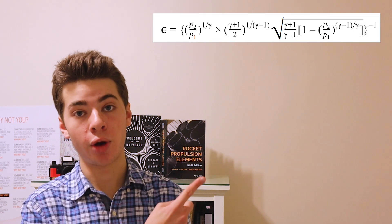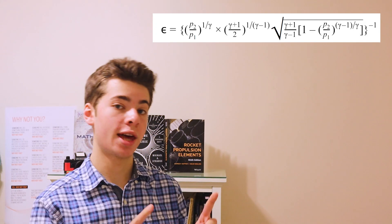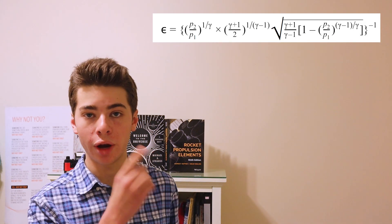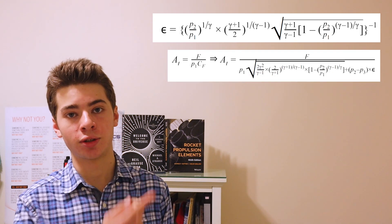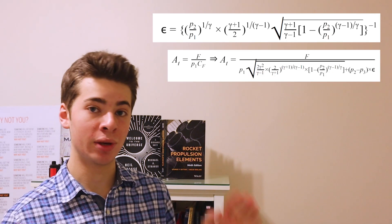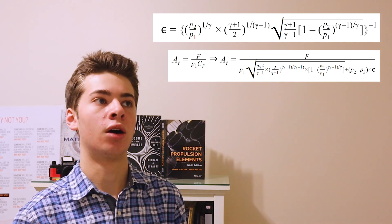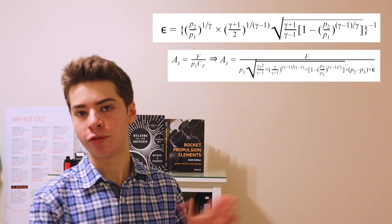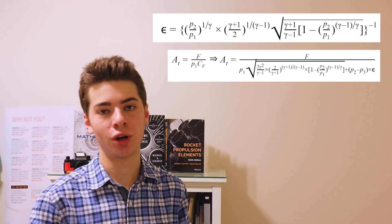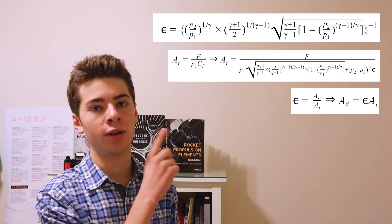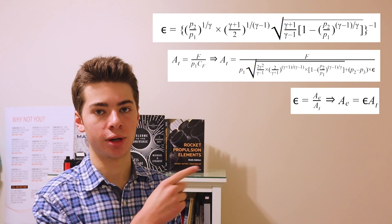The expansion ratio can be calculated with the following equation. Using that value of the expansion ratio, you can calculate the throat area using this equation — which, if you look closely, is just a manipulation of the classical rocket thrust equation. Then, by using the definition of the expansion ratio, you can find the cross-sectional exit area using this equation.